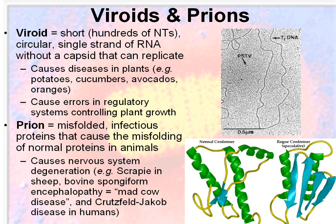What viroids do is cause errors in regulatory systems that control plant growth. Prions are misfolded, infectious proteins that can cause the misfolding of normal proteins in animals. Some can cause nervous system degeneration. In sheep, we see scrapie. In cows, we see mad cow disease or bovine spongiform encephalopathy. And in humans, the same disease — Creutzfeldt-Jakob disease — where basically the nervous system starts to break down.